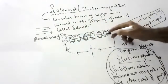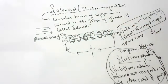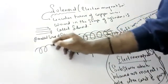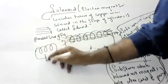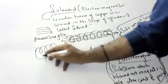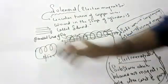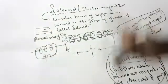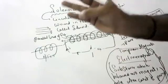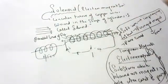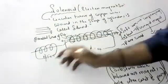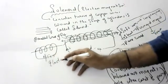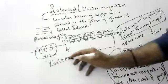Inside the solenoid the magnetic field exists like this. What is the solenoid used for? It is used to make electromagnets. You keep a soft iron element inside and pass current — it behaves as a magnet. Temporary magnets are called electromagnets: a substance which behaves as a magnet only when current is passed.